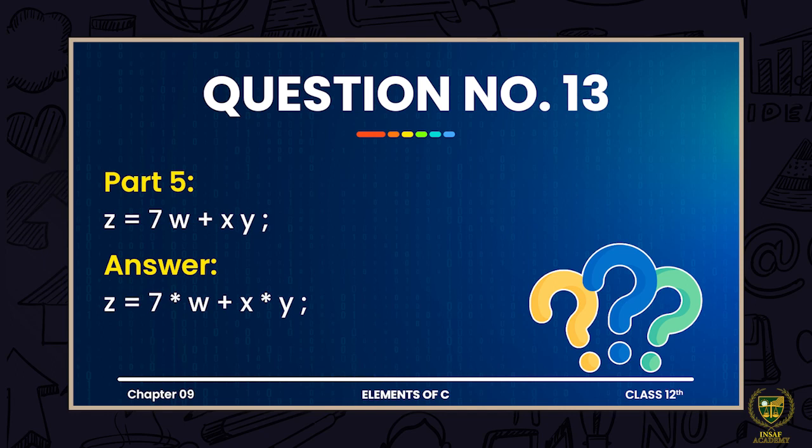In C, the compiler cannot automatically infer multiplication when terms are written adjacent to each other without an operator — unlike mathematics where writing terms together implies multiplication. So you must always explicitly write the multiplication operator between operands.